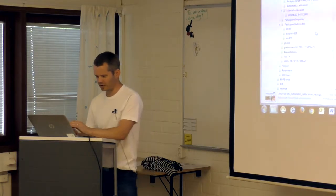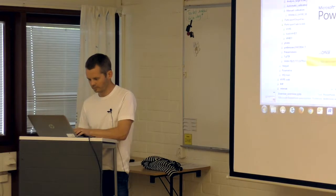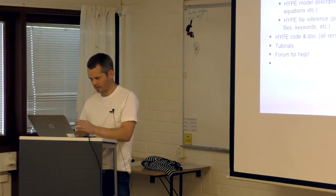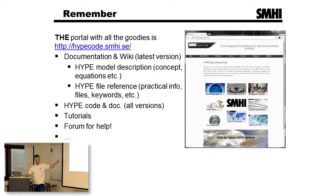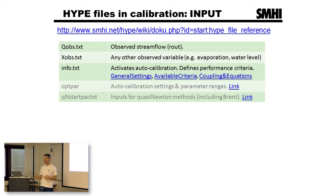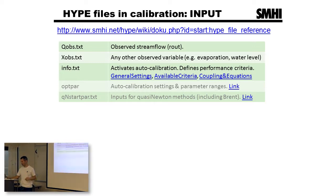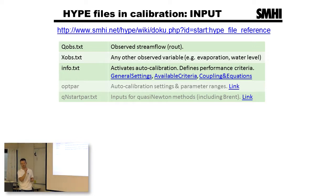Now moving to the automatic calibration exercise overview. Key files used here: for inputs to automatic calibration, you have observed discharge in the QOBS file, and in a file called XOBS you can have other variables like water level, evapotranspiration, or basically anything the model understands. The info file is really important for automatic calibration. There are links to documentation about this on the wiki — you have general settings for activating the function and what kind of criteria you want to calibrate against.